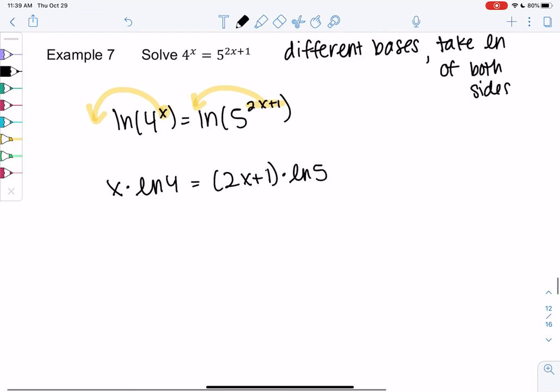So we have to do a little bit more simplifying on this one. So x times ln of 4 equals 2x times ln of 5 plus ln of 5 for the times 1.